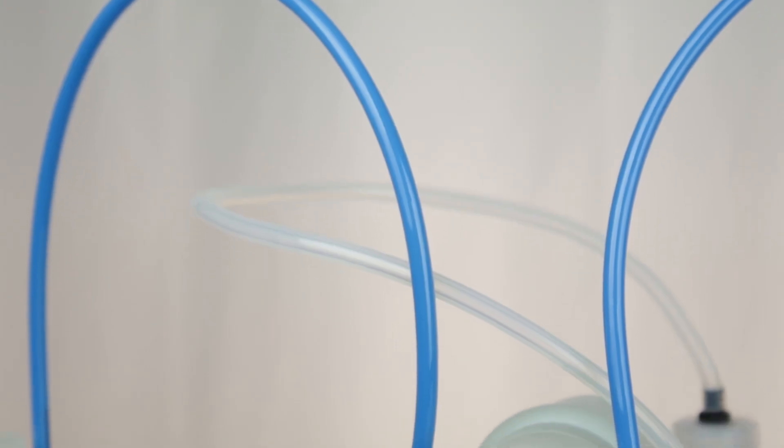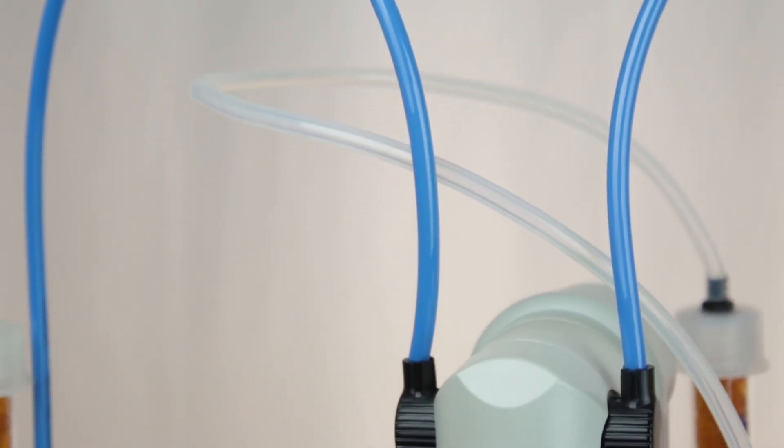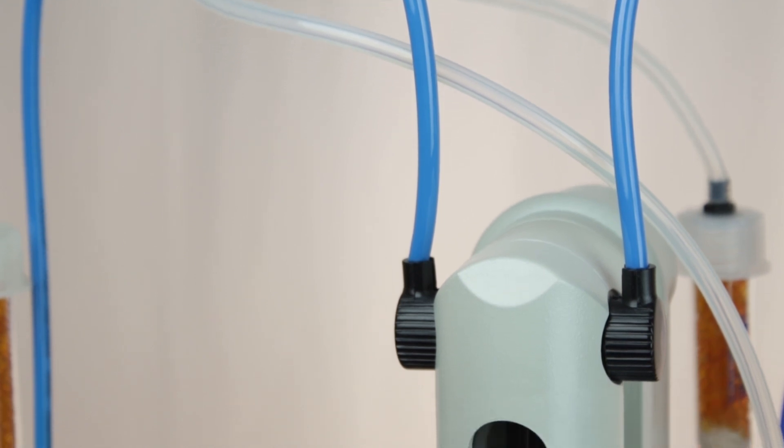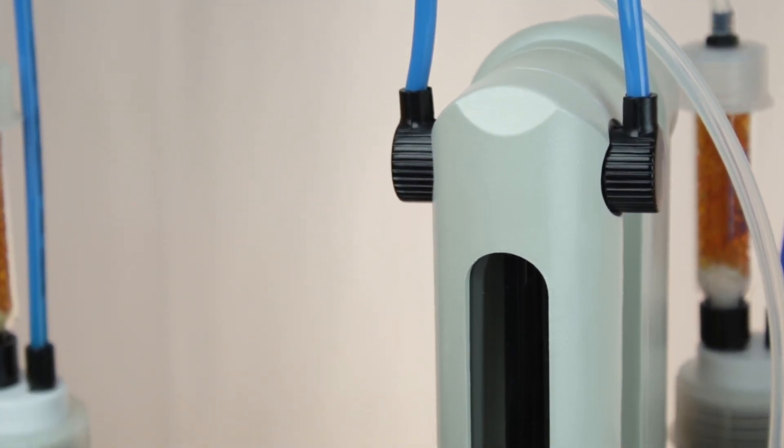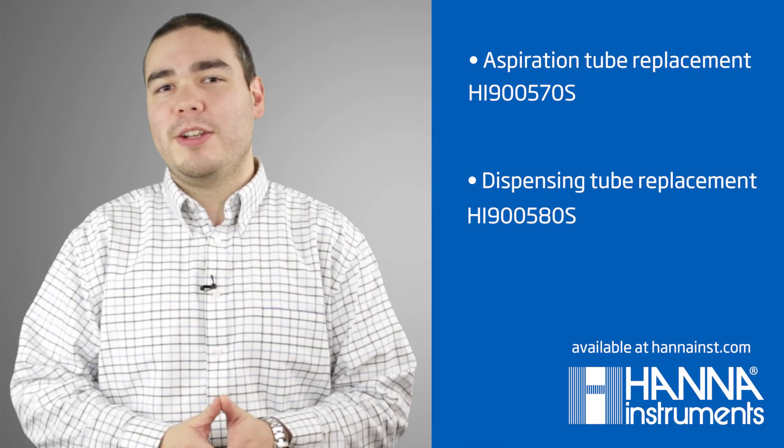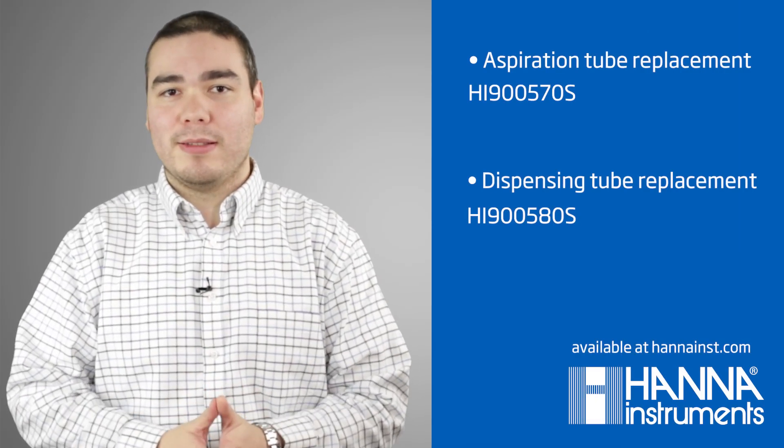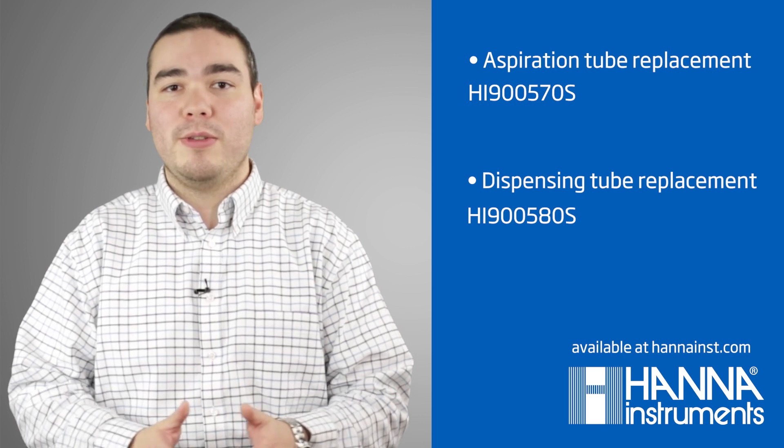This piece of maintenance is important because as your burette is in use, the tubing will wear down. If not changed regularly, it could leak and damage components of your titrator. We recommend changing the aspiration and dispensing tubes every six months or whenever you see leakage.